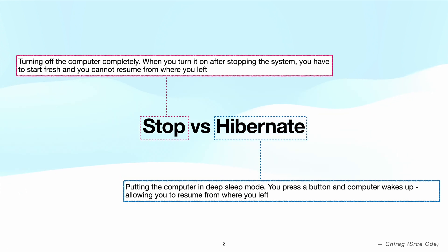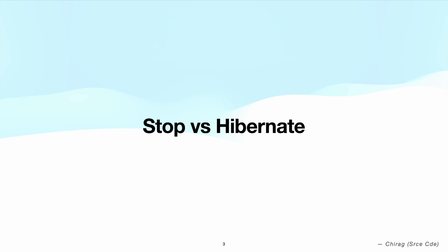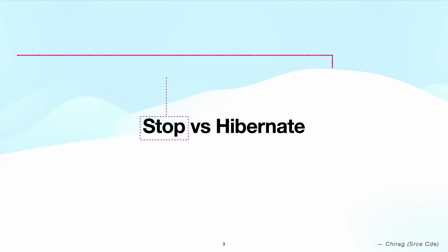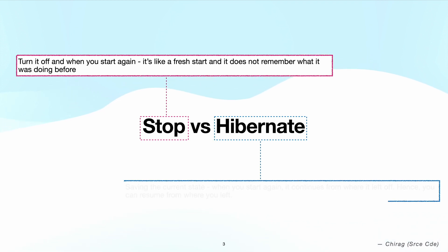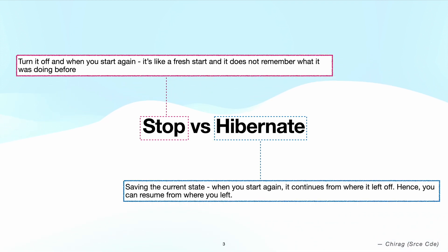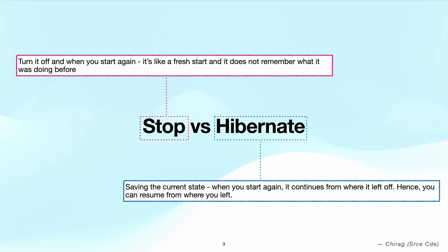In AWS EC2 instance terms, stopping an EC2 instance means you turn it off and when you start it again, it's like a fresh start and it does not remember what it was doing before. Whereas hibernating an EC2 instance means saving the current state of work first and then turning it off, and when you start it again, it continues from where it left off. So this is the quick difference between stop and hibernate.